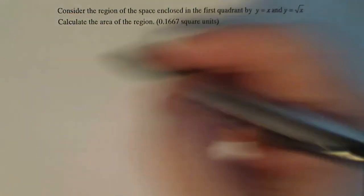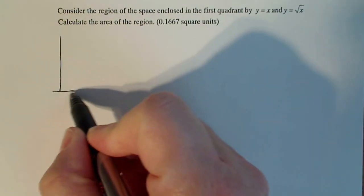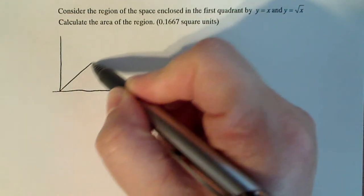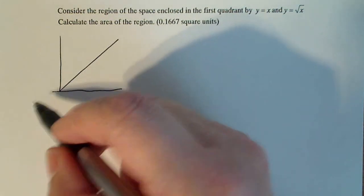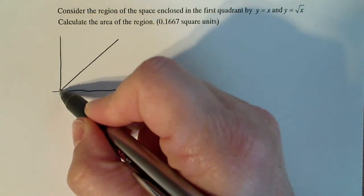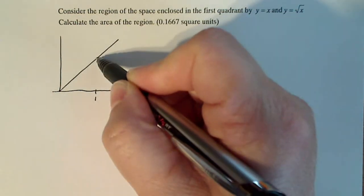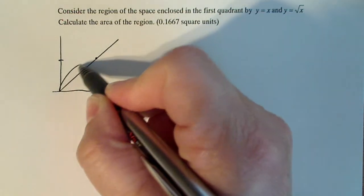So if I give a sketch of this, a little pair of axes here, y equals x bisects the first quadrant right in half, and y equals square root of x. Well, I know that it goes to the point zero, zero, and it goes to the point one, one as well. So it looks like this.